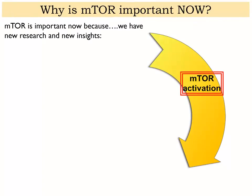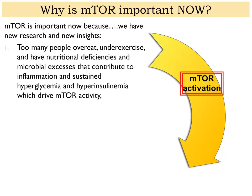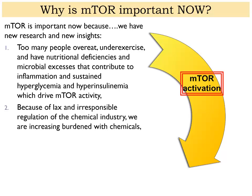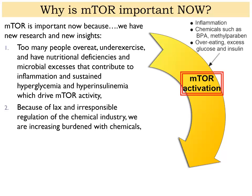Why is mTOR important now? Just like with mitochondria a few years ago, mTOR has become important because we have new research and new insights. Many people overeat, under-exercise, and have nutritional deficiencies and microbial excesses — all of which contribute to inflammation, sustained hyperglycemia, and hyperinsulinemia, and together drive mTOR activity. As our phenotype changes with more obesity, hyperglycemia, and hyperinsulinemia, we'll see more mTOR-related diseases. Chemicals like BPA and methylparaben also activate mTOR directly.